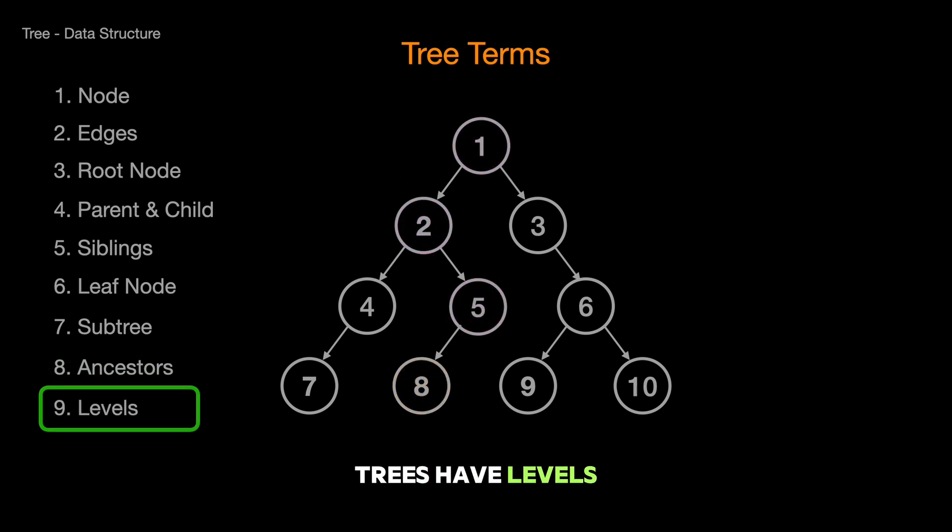Trees have levels. And no, we're not talking about difficulty levels in a video game. We're talking about the layers in our tree. Our root node sits at level 0, and its direct children are at level 1. As we move down the tree, the level numbers go up.